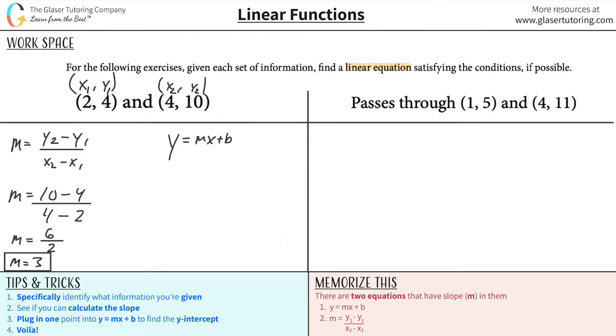So you can actually use either point you want to help you solve for b here. Let's say we're going to use this point here. All I now need to do is simply plug in the y value of that point, which is 4. The slope value I calculated to be 3. The x value of that point is 2 plus b. One equation, one unknown. Let's go. Let's do it.